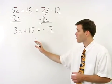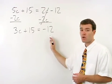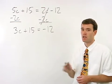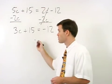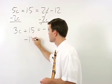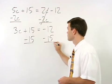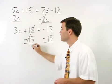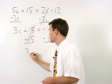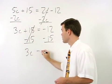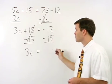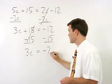Now we want to put our numbers together on the right side of the equation, and we do that by subtracting 15 from both sides. On the left, we have 3c, and on the right, negative 12 minus 15 is negative 27.